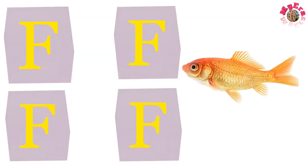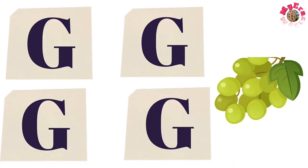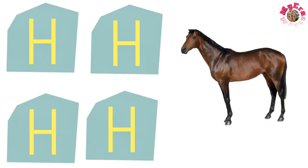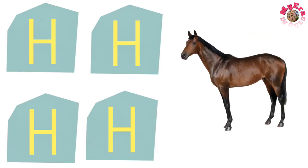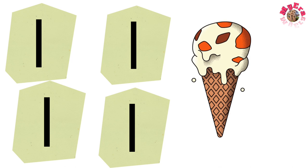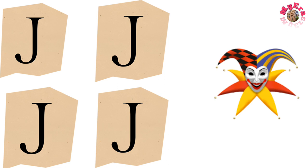F for fish, G for grapes, H for hawk, I for ice cream, J for joker.